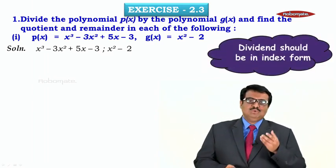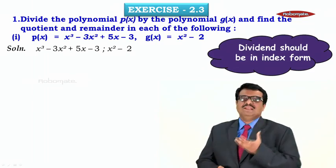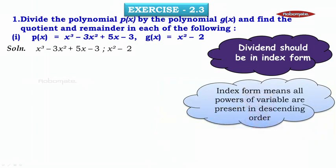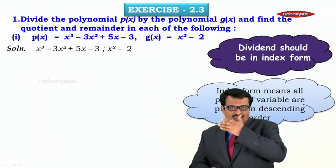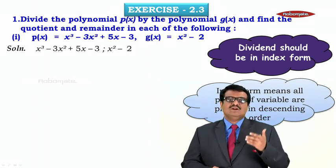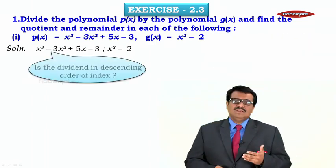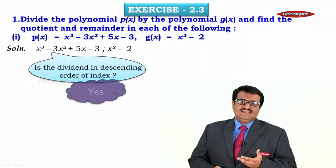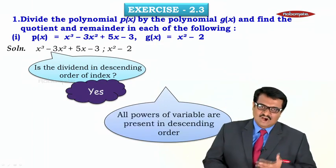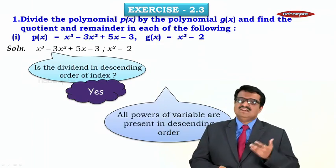The dividend should be in index form. Index form means all the powers of the variable are present in descending order — highest power first. The first polynomial has degree 3, so all powers 3, 2, 1, and 0 should be present. Since x³ − 3x² + 5x − 3 has all powers present in descending order, this dividend is already in index form.